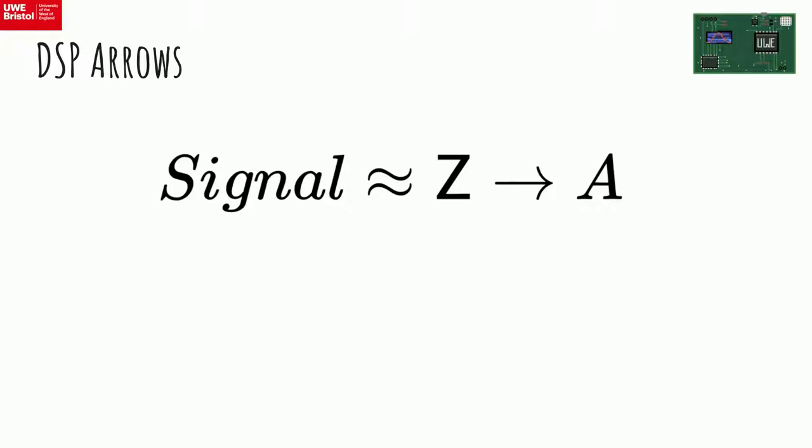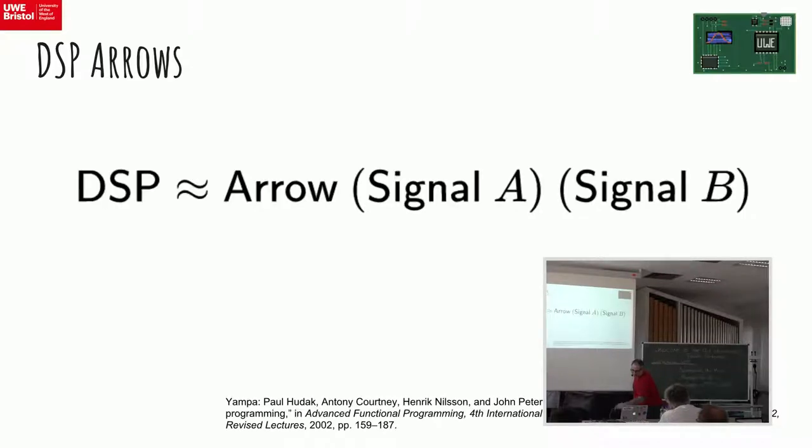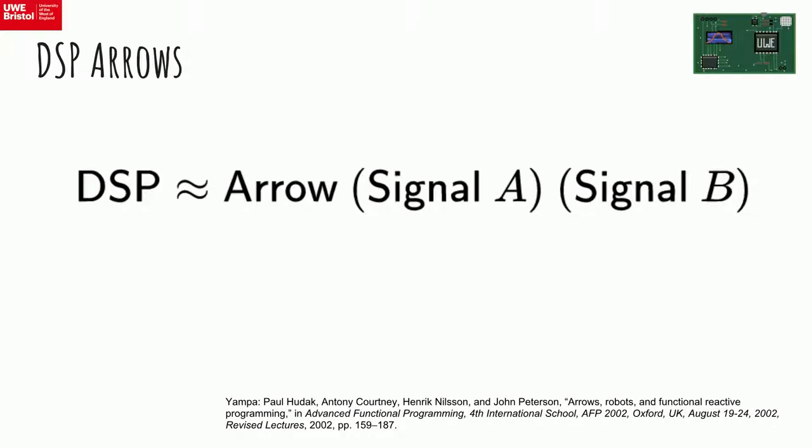And so when we actually want to get to DSP arrows, we can take a signal to be from Z to A, and then when we get a DSP, we can instantiate it to be an arrow from signal A to signal B. So just as you would in Faust. And again, it's not me that did this work, this was actually the original work was done by Paul Hudak and John Peterson, who developed this notion, he has this arrow notation as well, and this functional reactive programming framework called YAMPA, which we're still going today, they're still working on it.